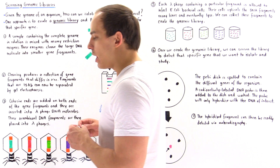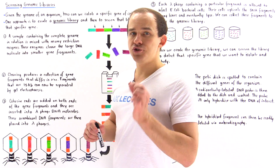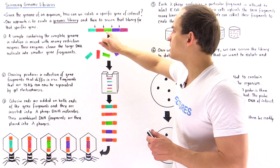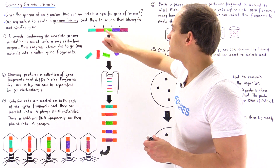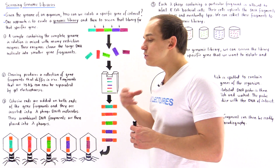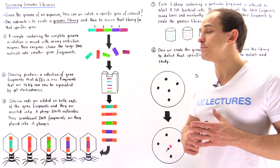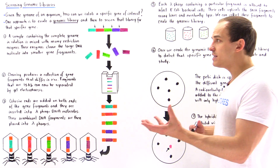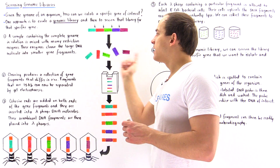Let's begin with step one. Let's suppose in a single beaker we have a solution that contains that complete genome. For simplification purposes, we have a genome in this diagram that only consists of five different genes: the dark green gene, the red gene, the light green gene, the dark purple gene, and the light purple gene. We take restriction enzymes and add them into that mixture. The restriction enzymes cleave our genome into different fragments, and these fragments will contain the different genes. So we basically break our genome into these five fragments.